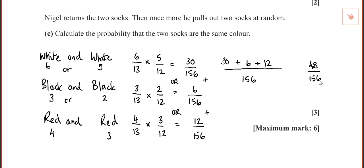We haven't really used any formulas as such, but we have applied probability — multiplying probabilities. I didn't use a tree diagram, but I could have done for this. I could have done a tree diagram to work out all the possible options, or a two-way table if preferred. They've made it possible by doing only two socks, so you could have used whatever method.